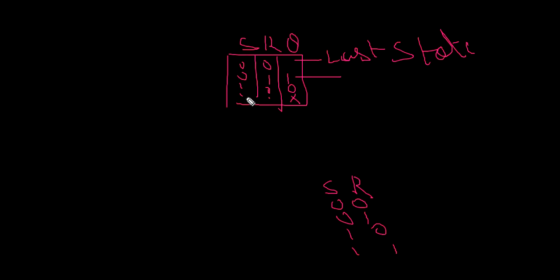Looking at the SR truth table: when S is 0, 0, it holds the last state. When S is 0 and R is 1, it is called reset. When S is 1 and R is 0, it is called set.